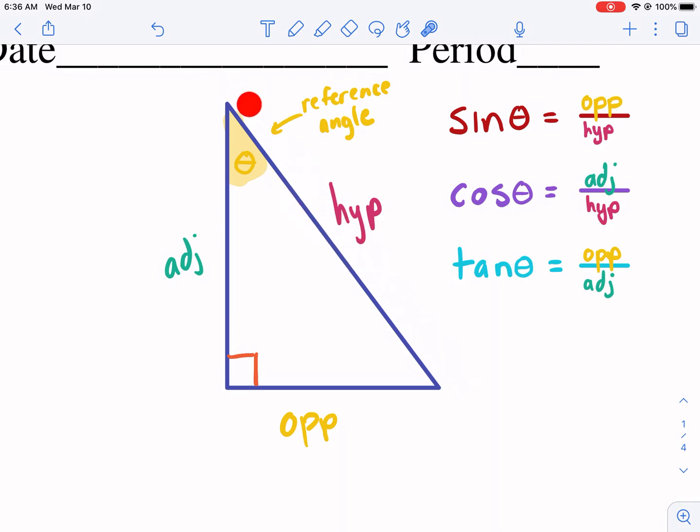And then we have the hypotenuse. The hypotenuse is always going to be the same because the hypotenuse is always opposite the 90 degree angle. Now our reference angle is never the 90 degree angle. It's always going to be one of the two other angles in the triangle.